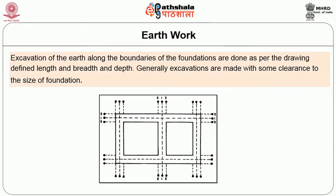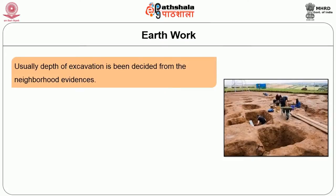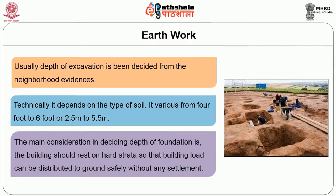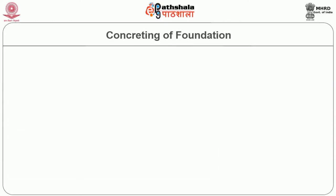A plumb bob is used to check that each peg is directly beneath the outside foundation line. After marking, we go for the earthwork. Excavation of the earth along the boundaries of the foundation is done as per the drawing-defined length, breadth and depth. General excavations are made with some clearance — about six inches on either side. The depth of excavation depends upon the type of soil and usually varies from four foot to six foot, or 2.5 to 5.5 meters. The main consideration is that the building should rest on a hard strata so that the building load can be distributed to the ground safely without any settlement.